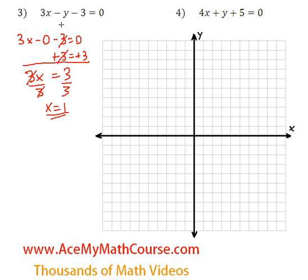So that is the x-intercept for the first line. And x equals 1 is right here, 1 comma 0. Okay, what about the y-intercept?